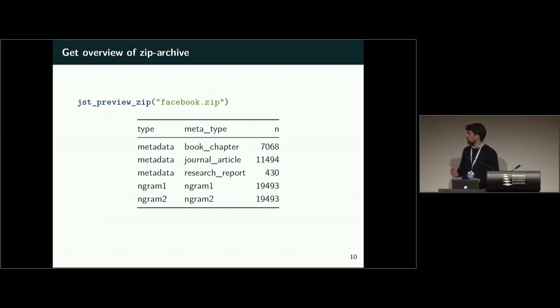And we can take a quick look at the zip file. For our sample here, we have three different types. So we have metadata files, ngram1 are unigrams, ngram2 are bigrams. And that means each item in our sample, each of those 20,000 items, has three files attached to it. One with metadata and two with n-grams.